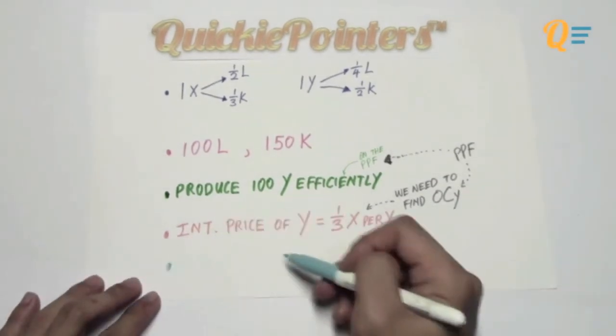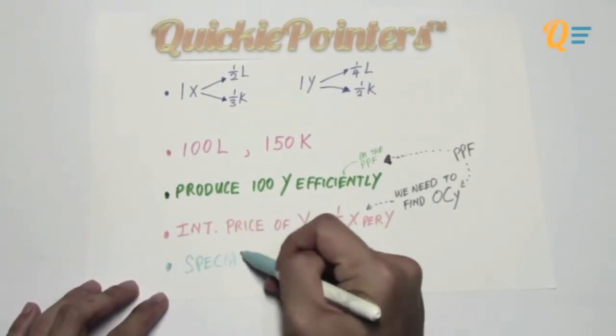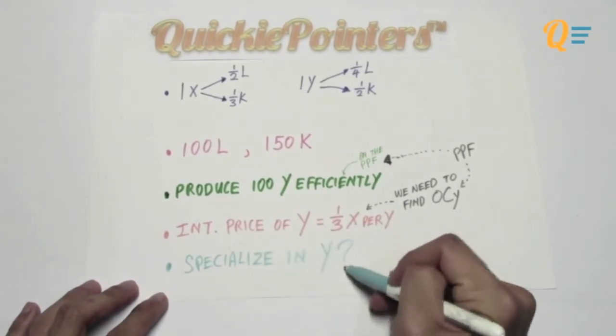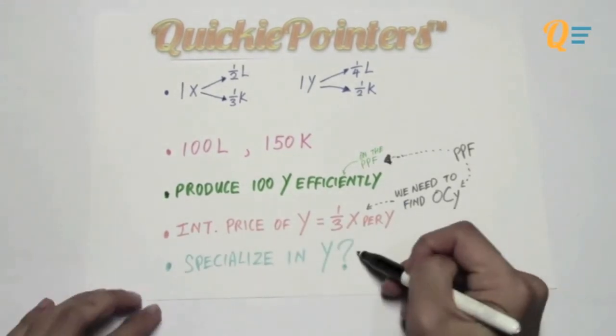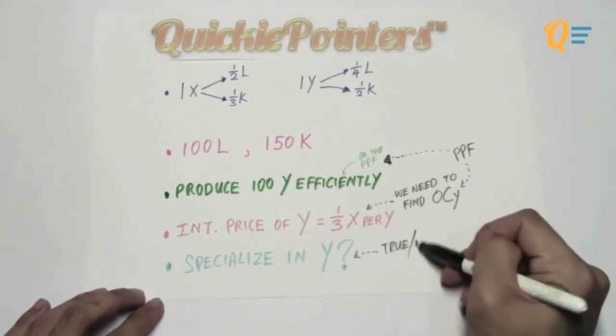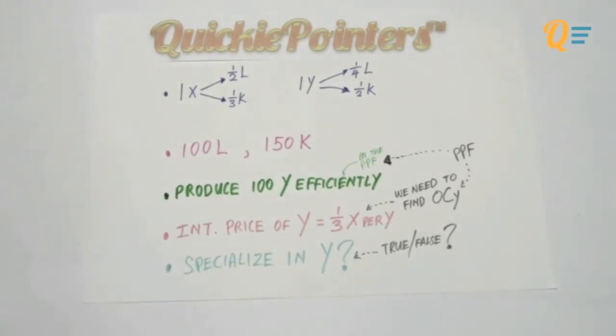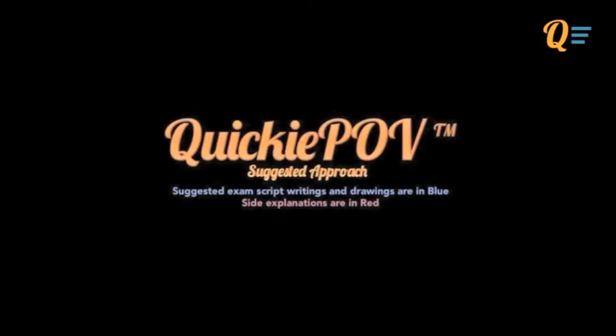And moving on to the last point, we know that the question is asking us whether Quickie Land is going to specialise in the production of Y given that level of international price, which is one-third X per Y. So is this statement true or false? We will now take a look at this in the Quickie PoV suggested approach.